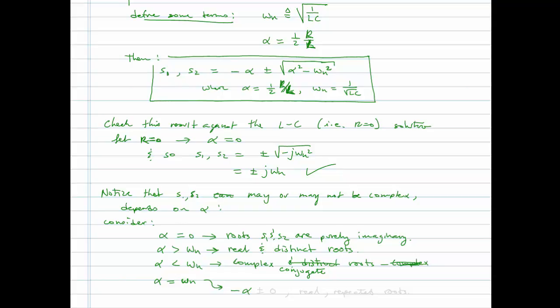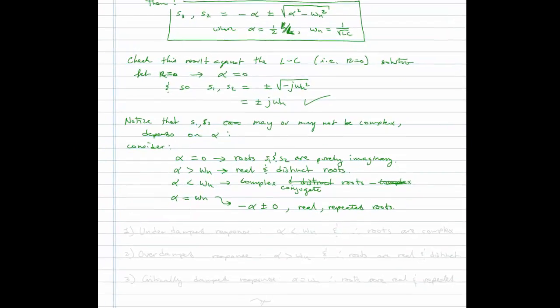And then we can consider a case, what if alpha is equal to omega n? In that case the roots would be minus alpha plus or minus zero because the radical would evaluate to zero. So this would lead to real repeated roots. For instance, if it turns out that alpha is equal to one, then we have two roots, one at minus one and another root at minus one.